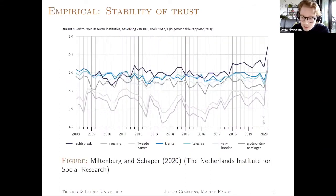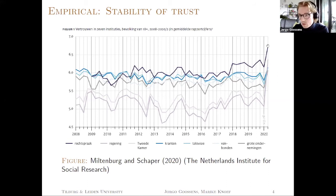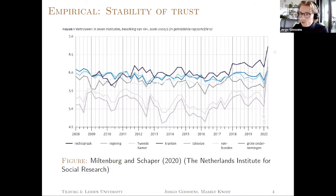To give even more intuition, this is a graph from the Netherlands Institute for Social Research. On the horizontal axis it shows time, 2008 to 2020. Each quarter this institute measures trust in institutions in the Netherlands — the administration of justice, parliament, the government, newspapers, televisions, labor unions, and big corporations. During March 2020, also the period where we did our survey, there's a huge increase in trust in these institutions. We make exactly the same finding: people have an increase in trust in insurance companies during periods of stress.